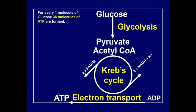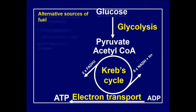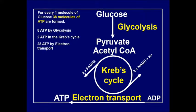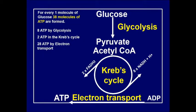For every one molecule of glucose, 38 molecules of ATP are formed. Eight ATPs are made in glycolysis, only two in the Krebs cycle — because the purpose of the Krebs cycle is not actually to make ATP — and 28 ATP are made by electron transport. So most energy is produced in the electron transport. We also need two molecules of ATP to prime and start glycolysis, so effectively we remove two from the total.